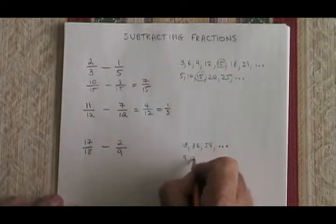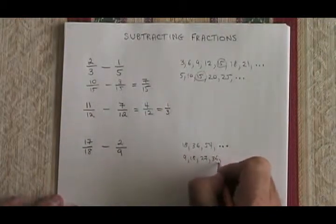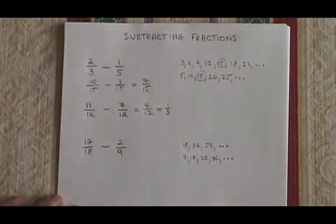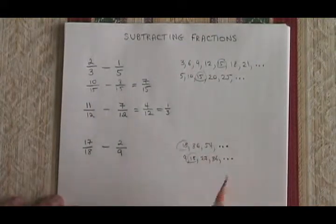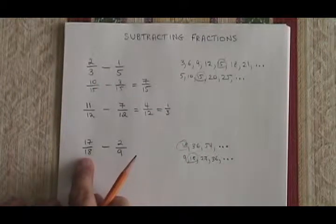For 9, we get 9, 18, 27, 36, and it keeps going. And the lowest number that's on both lists is the 18. It turns out that our lowest common denominator is already the denominator of one of our fractions.